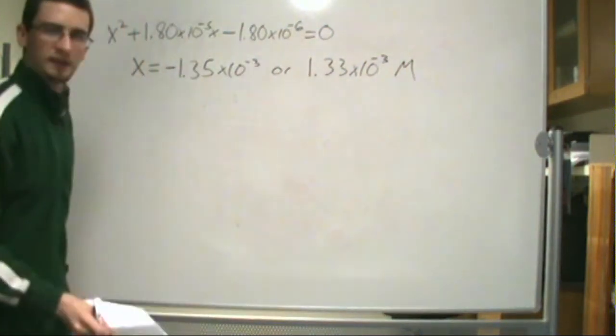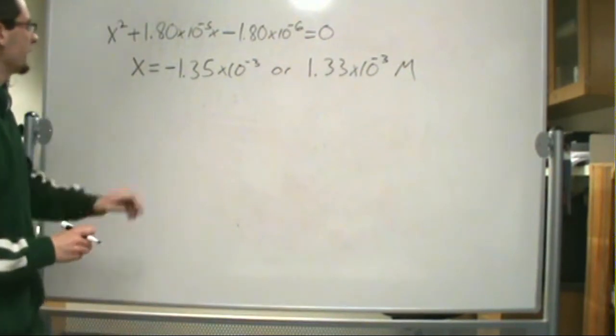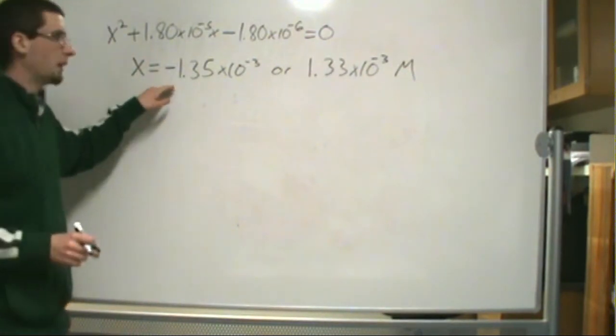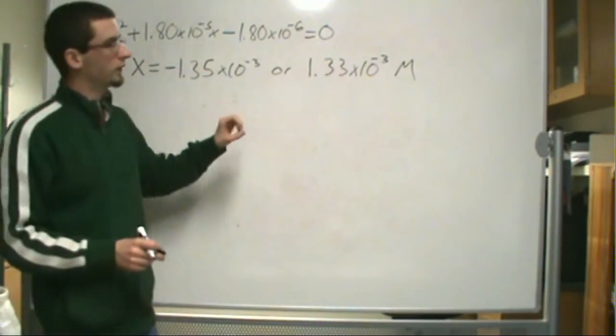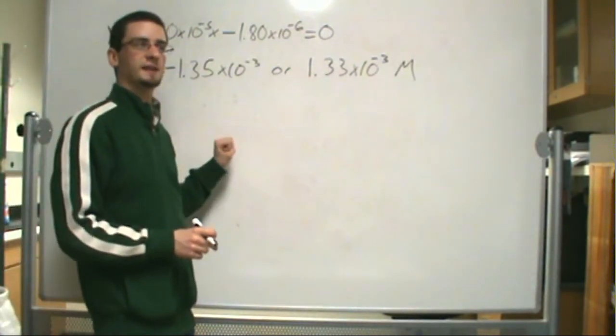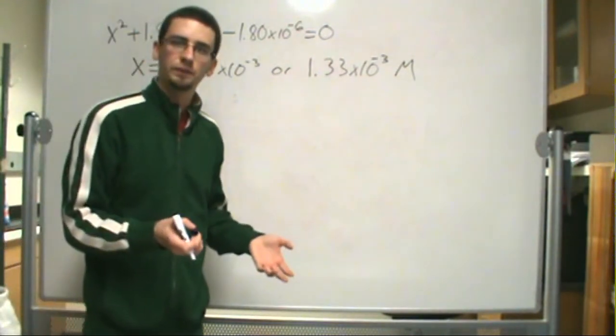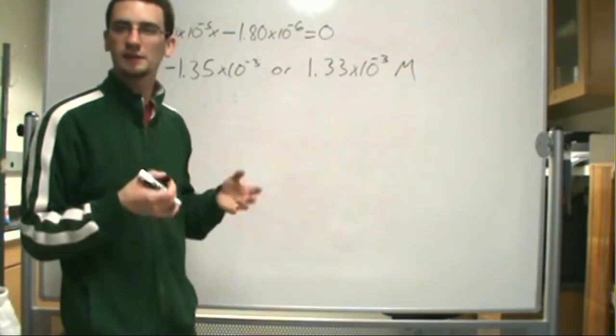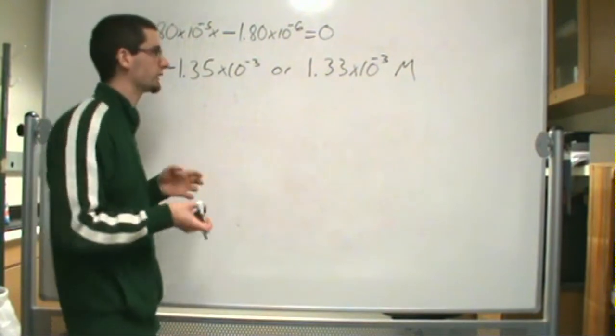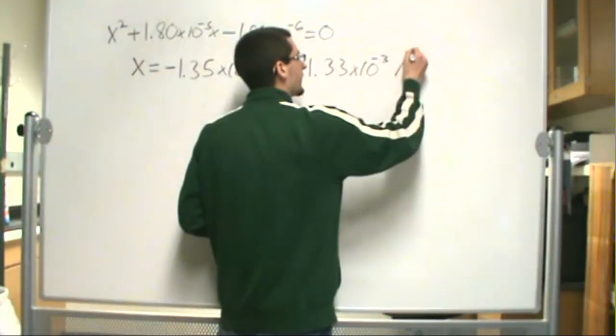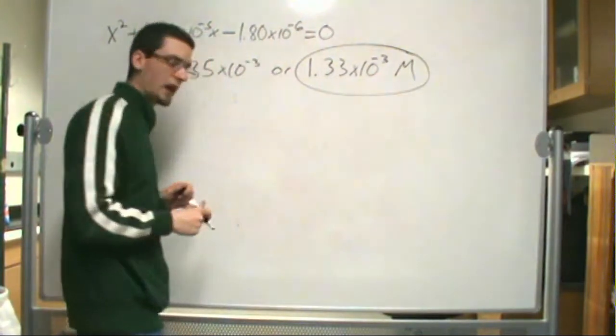So which one of these answers makes sense? Well, we can't have a negative X value because if you remember our ICE diagram, we started off with a concentration of 0 for our acetate ion. We can't get any less than 0, or we can't have less than 0 acetate ions because that makes no physical sense. So this is our answer right here for X.